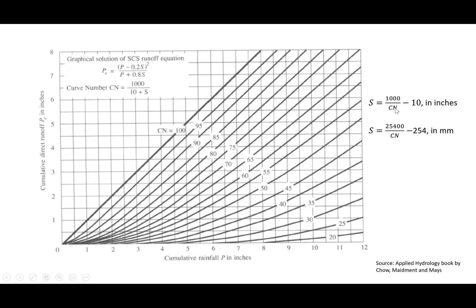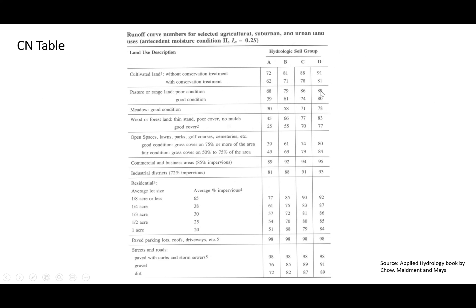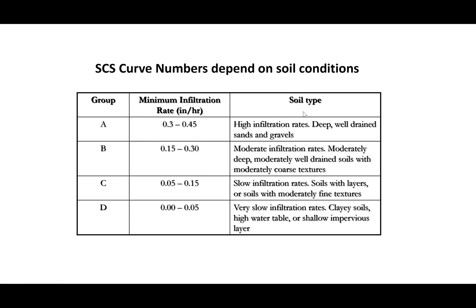The question is how do we get the curve number? SCS published a table where the curve number is a function of hydrologic soil group — A, B, C, and D — and land cover. If you know the land use for your watershed and what hydrologic soil group you have, you can get the curve number for any given area or watershed. For example, if we have a good condition meadow and the hydrologic soil group is C, the curve number is 71. The table also shows what hydrologic soil groups A, B, C, and D mean.